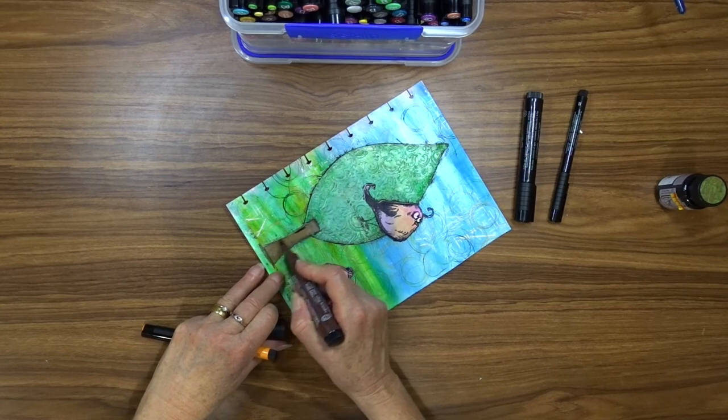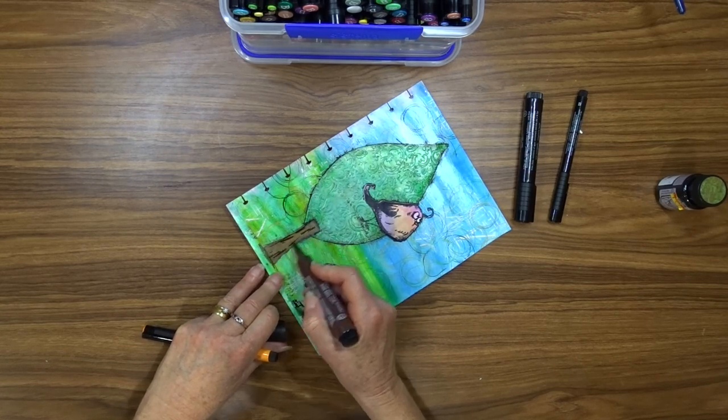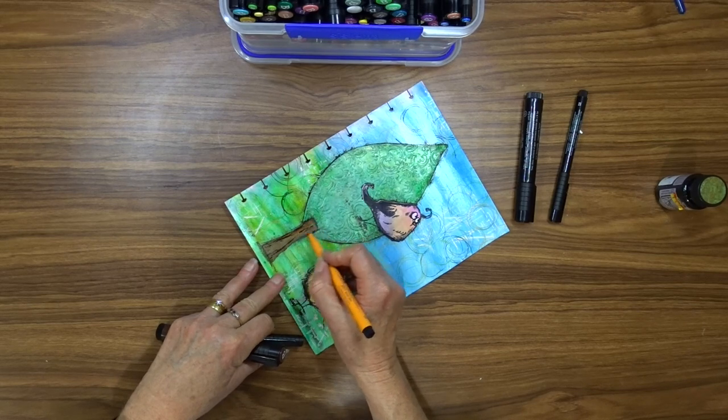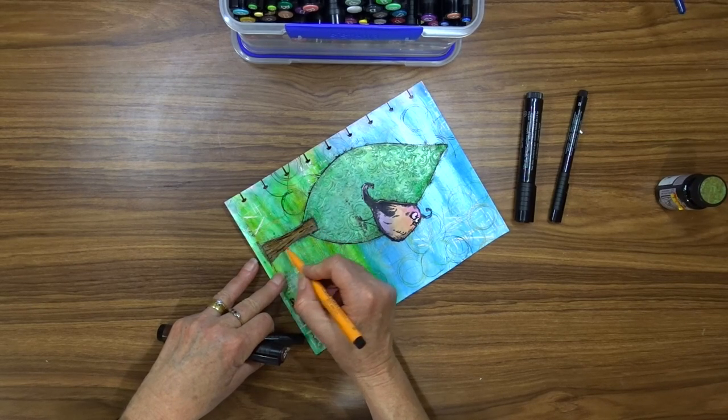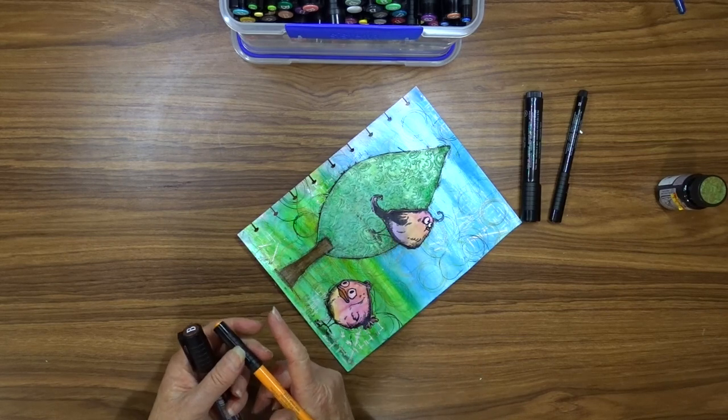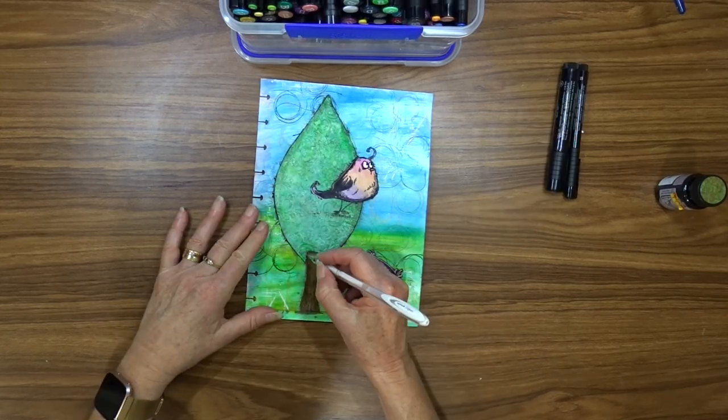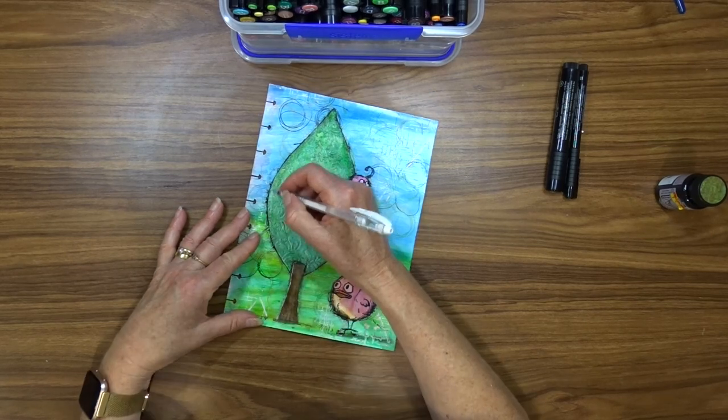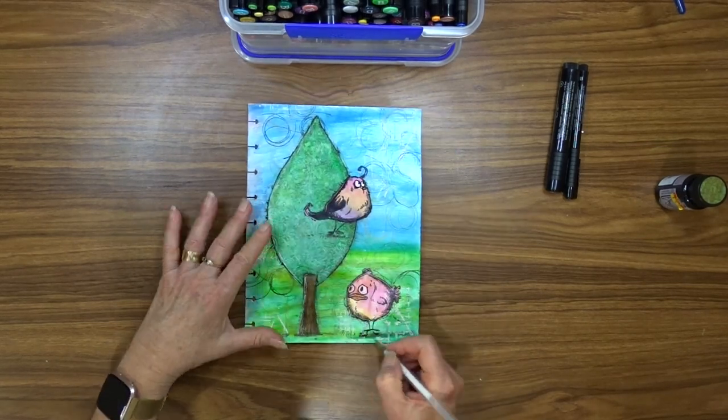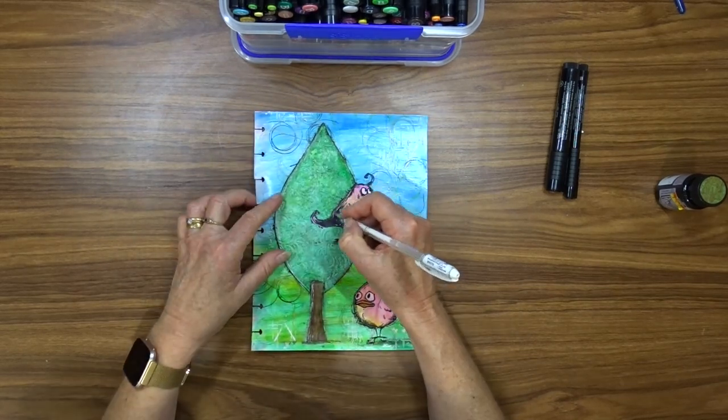I use the big brush markers also to add a bit of variation to the tree trunk so I use the black and I also use an orange to give it a few highlights. Using my Signo white gel pen I add some highlights here and there to both the tree and the birds.